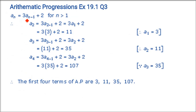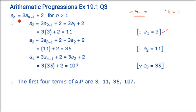Next problem: let aₙ be a sequence defined by a₁ = 3 and aₙ = 3aₙ₋₁ + 2 for all n > 1. Find the first 4 terms. This is a recursive type of question. a₁ is already given as 3.